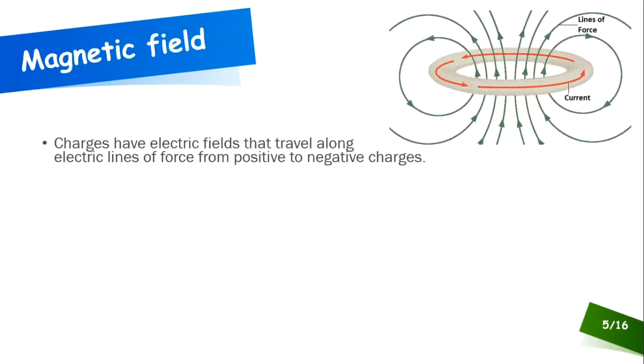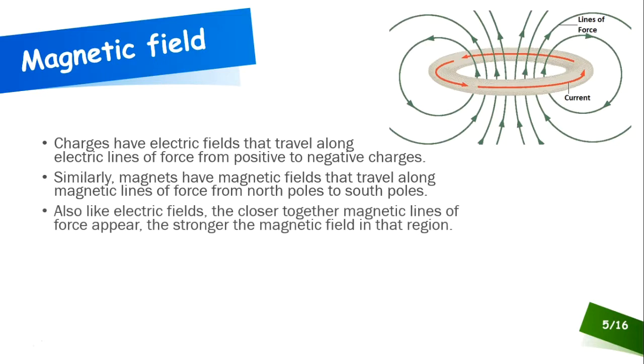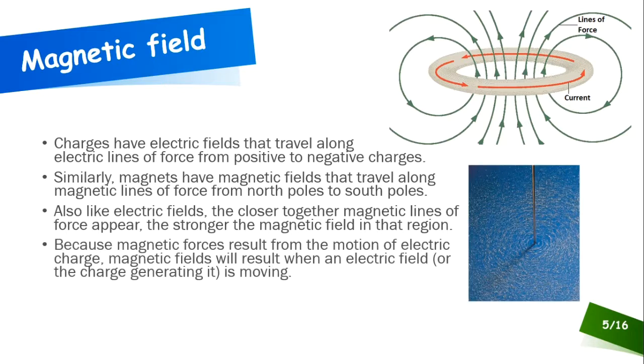Let's talk a little bit more about that magnetic field. Charges have electrical fields that are traveling along electrical lines of force, and the direction that they travel by convention that we've adopted is from positive to negative. You see something similar with magnetic fields. Magnetic fields also travel along magnetic lines of force. And by convention, those lines of force go from north poles to south poles. Also similar to what we see in electric fields, the closer together those lines of force are, the stronger the field is in that region. Keep in mind, like we said earlier, magnetic forces do not exist where there's no electric charge in motion.